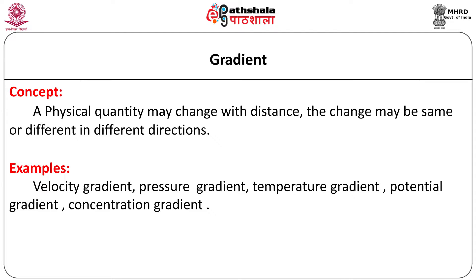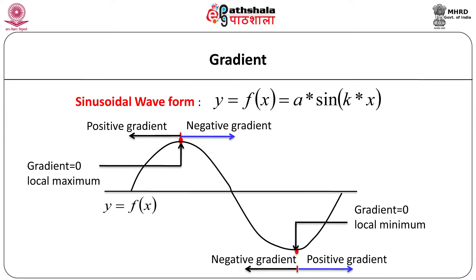There are many examples to understand this concept. Whenever water is flowing through a river, the velocity of the water layers changes with height or depth. As you climb up the hill, the pressure changes. When you heat a rod using some source of heat, the temperature along the length of the rod is different at different points. Thus, we talk about velocity gradient, pressure gradient, temperature gradient, potential gradient, concentration gradient, and so on. Let us try to understand this with the help of some diagrams or graphs.